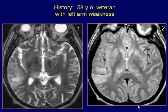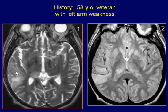A 58-year-old veteran with left arm weakness. Axial T2 and proton density-weighted images of the brain reveal a hyper-intense lesion in the region of the right temporal lobe with involvement of both gray and white matter. A mild degree of mass effect is present. Another subtle hyper-intensity is noted in the right posterior thalamus.